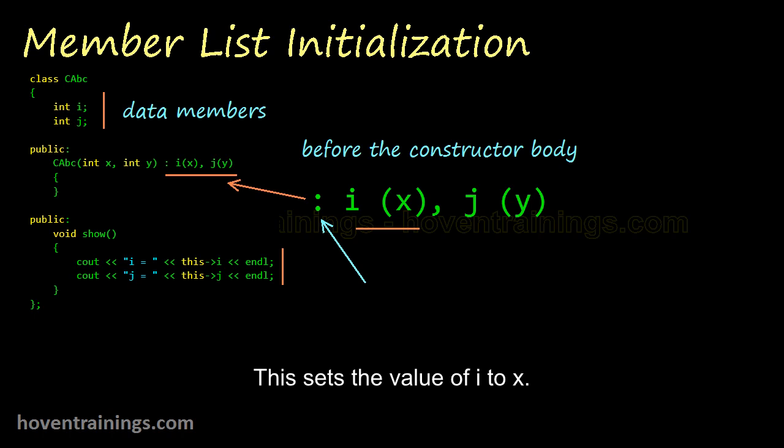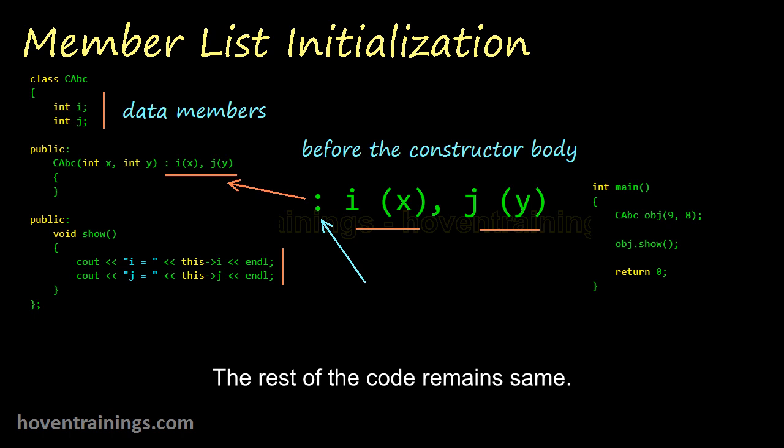This sets the value of i to x. And here j is initialized to y. The rest of the code remains same. The constructor arguments must be passed as usual. There is no change in instantiation of the class.